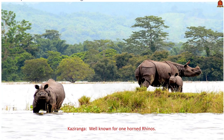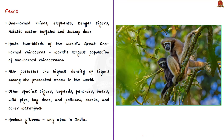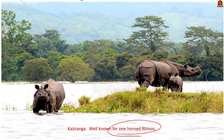Now let us look at the fauna of Kaziranga. Kaziranga National Park is known for the 'Big Five': one-horned rhinos, elephants, Bengal tigers, Asiatic water buffaloes, and swamp deer. Of the big five, Kaziranga is especially known for the one-horned rhinoceros — this National Park has almost two-thirds of the world's one-horned rhinoceros population. This is why this National Park is very important.